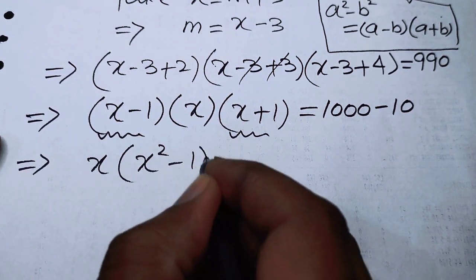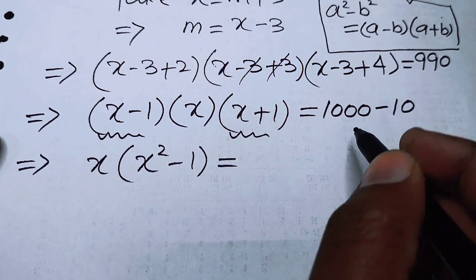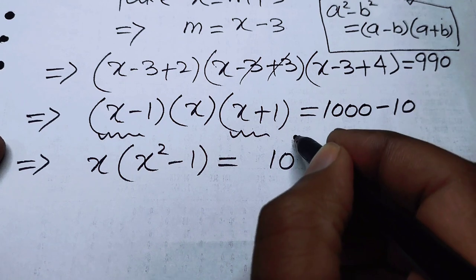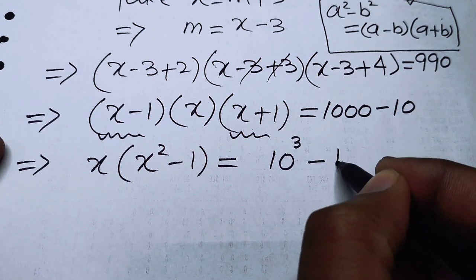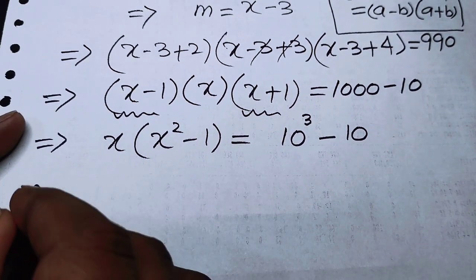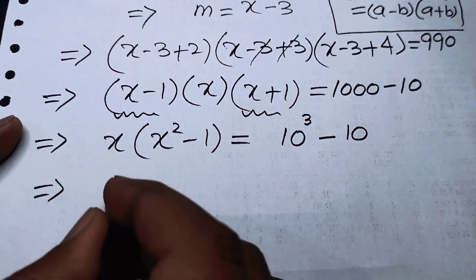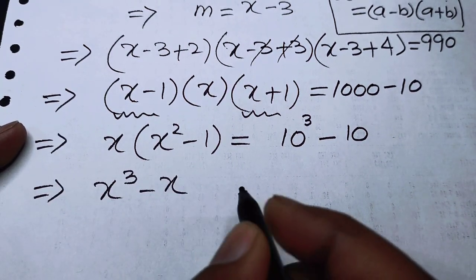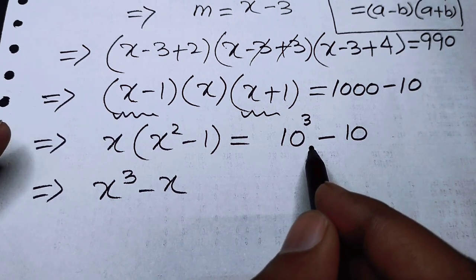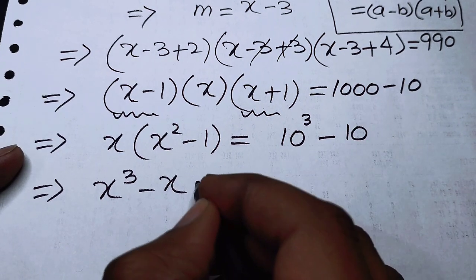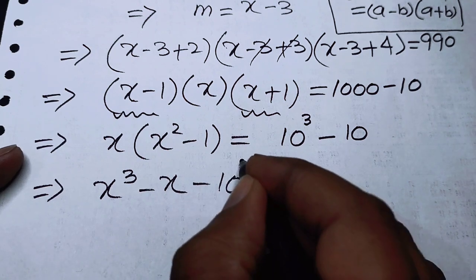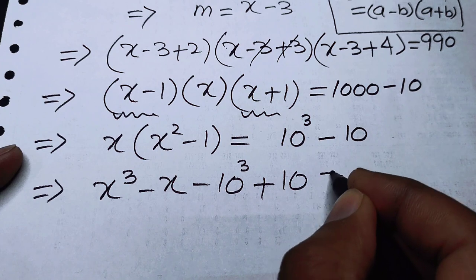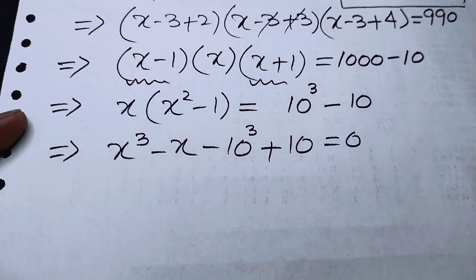This gives us x times (x squared minus 1) equal to 10 cubed minus 10. Multiplying out, we get x cubed minus x. Taking both terms from the right hand side to the left gives x cubed minus x minus 10 cubed plus 10 equals 0.